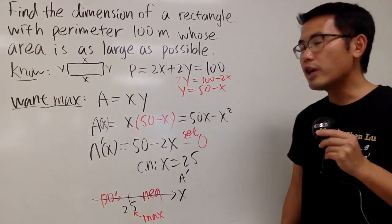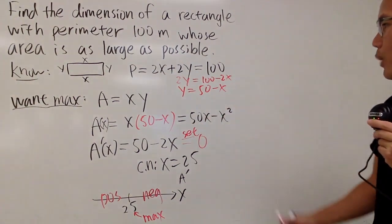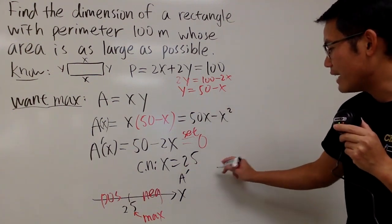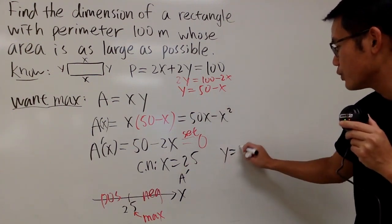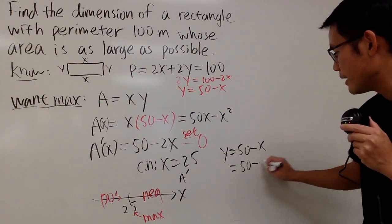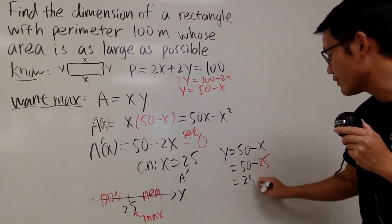Now the question is asking us to find the dimension. So we just have to find out what y should be as well. So we know x is 25, and that means y is equal to 50 minus x, and of course, that's just going to be 50 minus 25, and that means y is equal to 25.